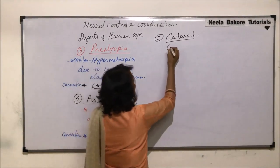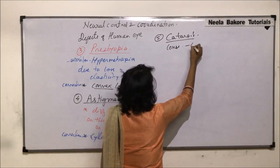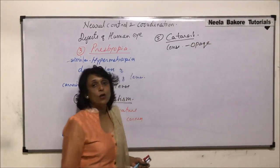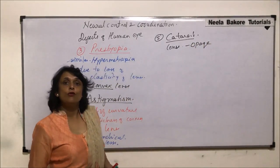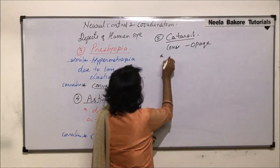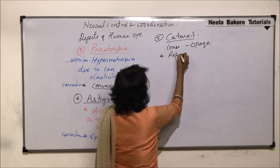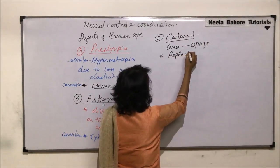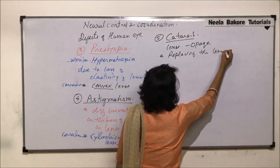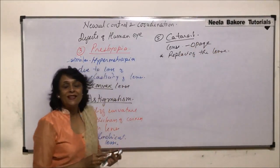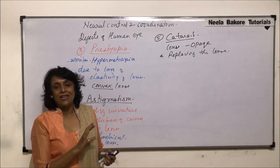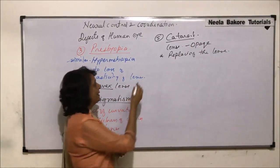In cataract the lens becomes opaque and there is only one solution: replacement. Correction is done by replacing the lens — the opaque lens is removed and a new, transparent lens is implanted.